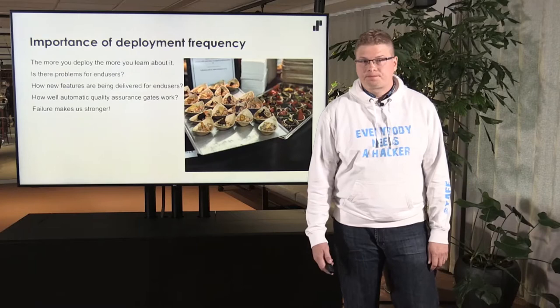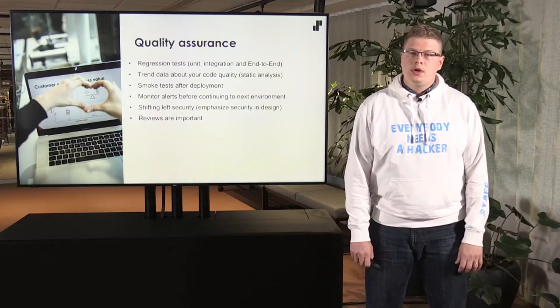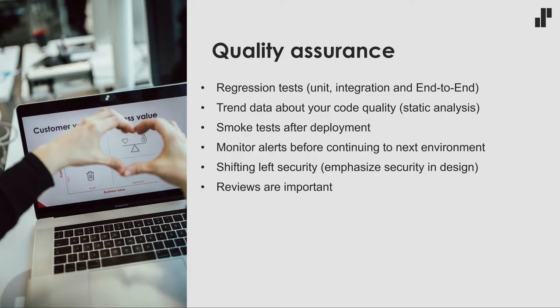Quality assurance needs to be top notch. You have to think about all the small details of what you could test — like regression tests, unit tests, integration tests, and end-to-end tests — to catch all possible errors. I also advise that you collect trend data about your code quality with static code analysis: how many style issues you have, how many to-do comments are in your code, and so on, and check that your code quality doesn't get worse over time.